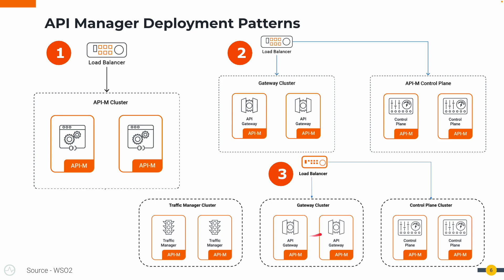WSO2 products are engineered to support horizontal scaling rather than vertical scaling. It is best to add more instances rather than increasing the CPU count or allocated memory when you want to handle more traffic. Adding more instances provides more room for handling increased traffic. In a nutshell, horizontal scaling is best supported rather than vertical scaling.